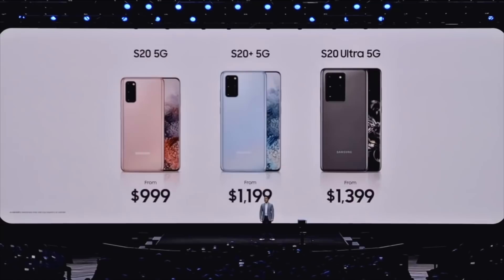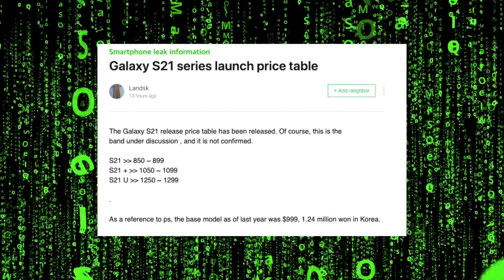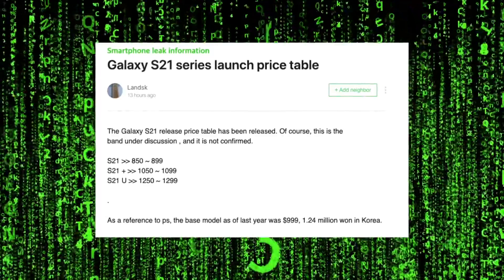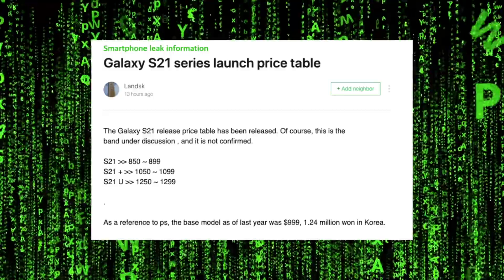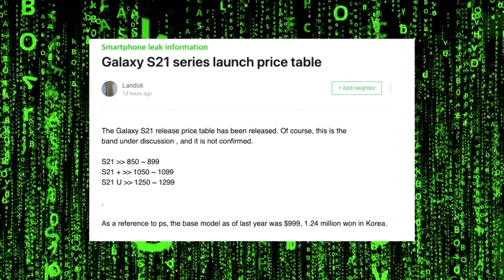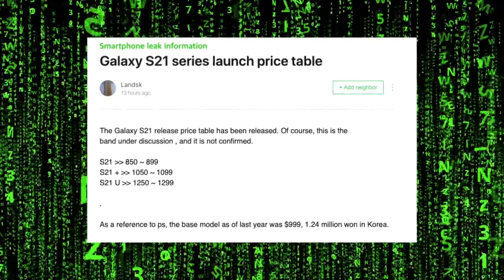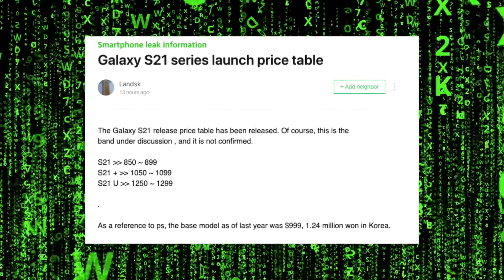Now as we're approaching the official date of the Unpacked event, we've got some new pricing leaks coming from South Korea. It seems like Samsung has finally learned their lesson. Unlike the crazy pricing of the S20 series, the S21 family could start from $800 all the way up to $1300 with the S21 Ultra, which is $100 less than the S20 Ultra. The pricing for all models in this rumor is looking pretty good.